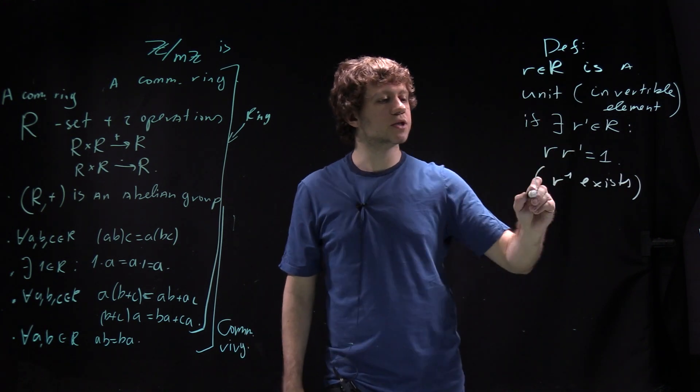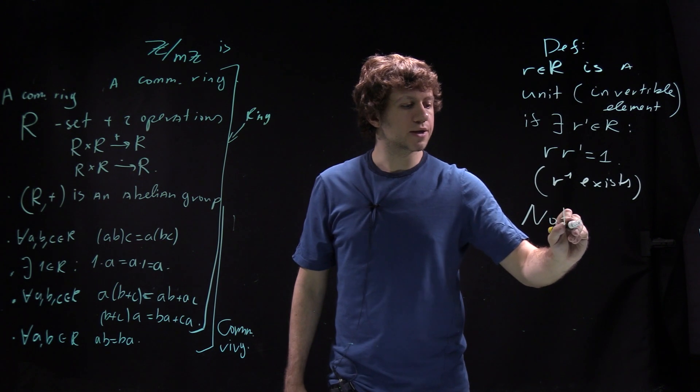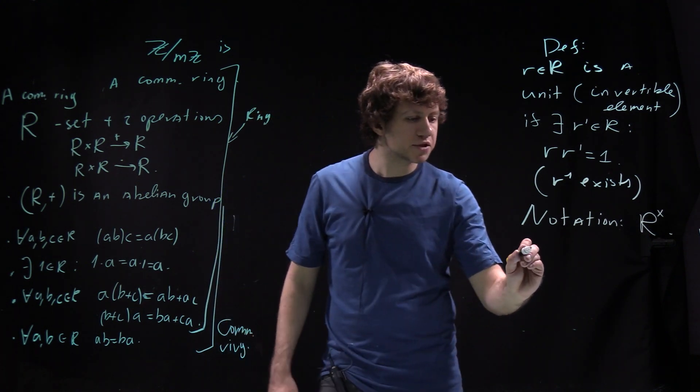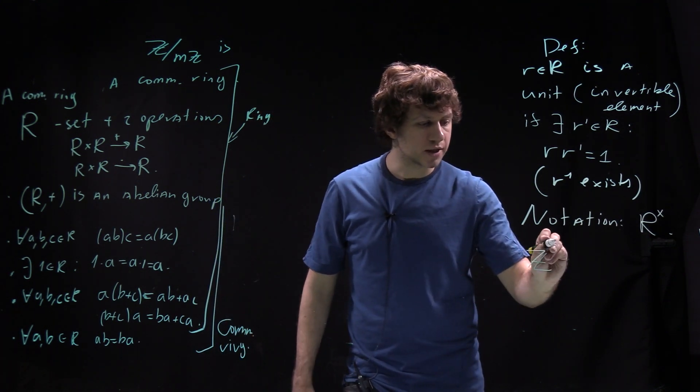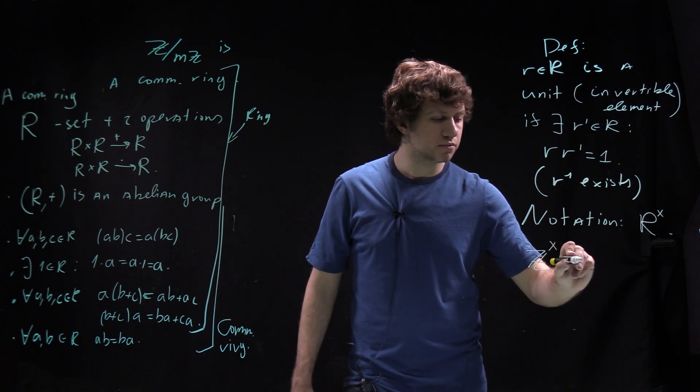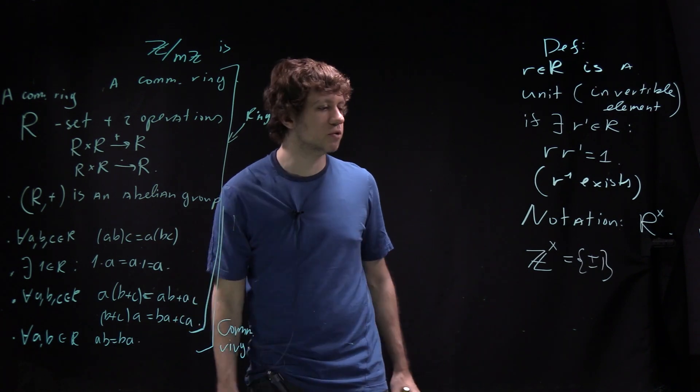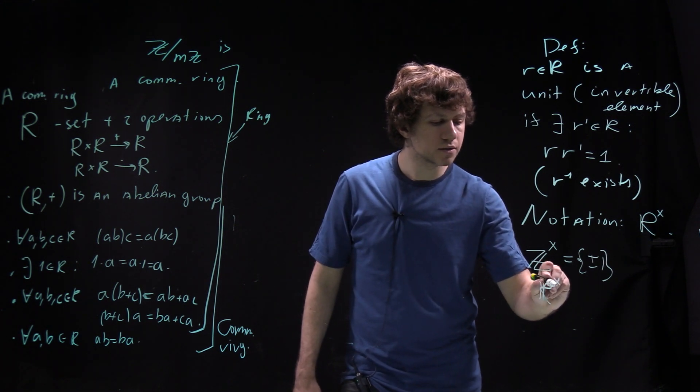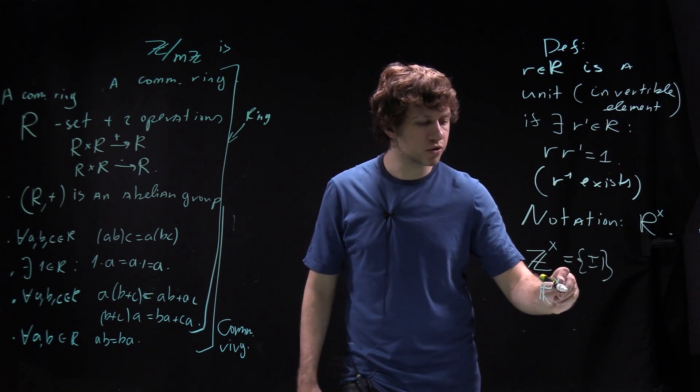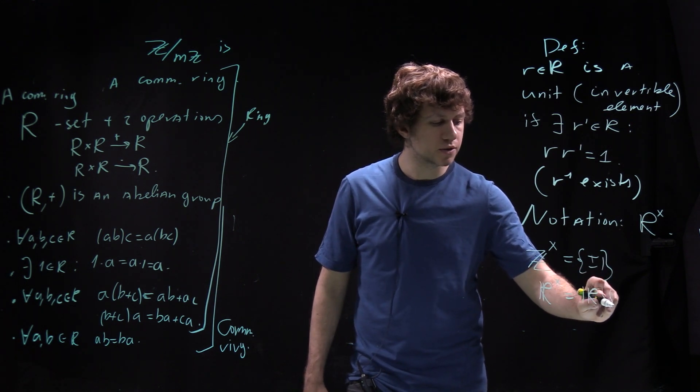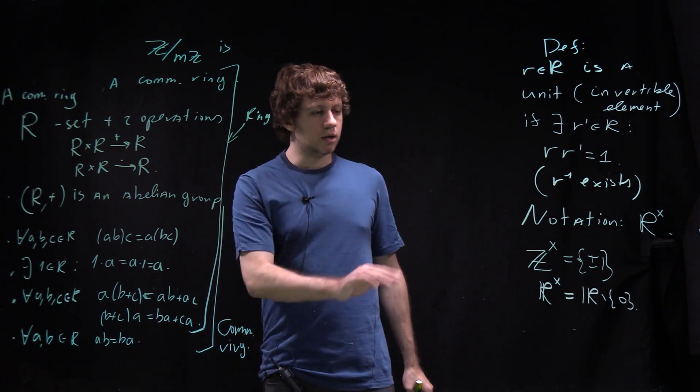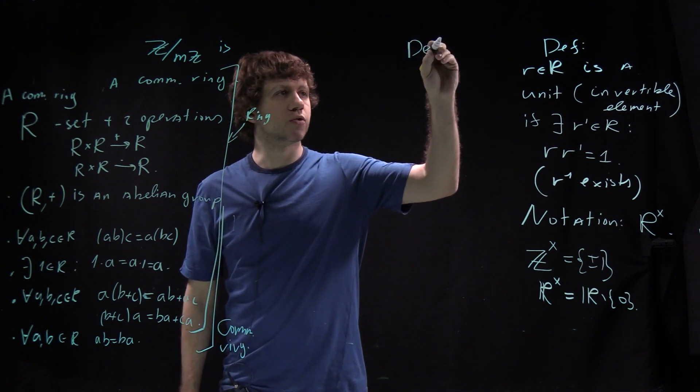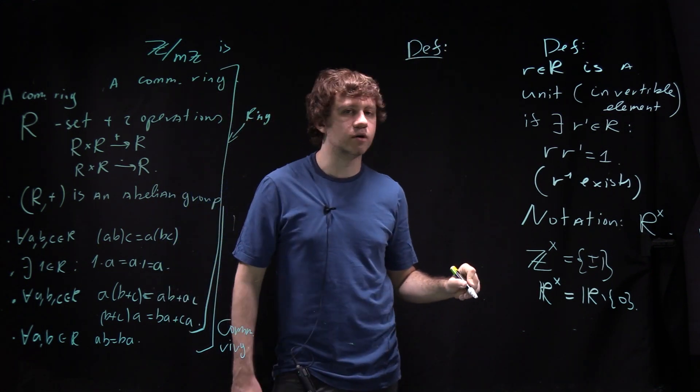The set of units, notation is R times. You can take Z which is a ring, and Z units gives you plus minus 1. These are invertible elements; 1 over 2 is not there. For R units, you get all elements without 0.